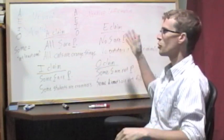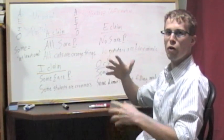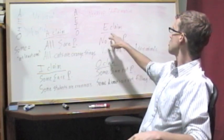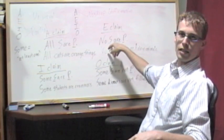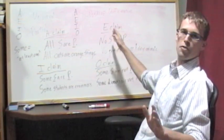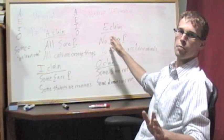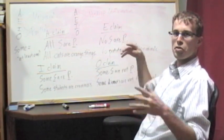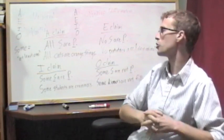So they're going to exclude at least one thing from having those two properties together. So in this case, the E claim, none of the subject class is also going to be part of the predicate class. So, no potatoes are hairy animals. So there's no intersection between the two.